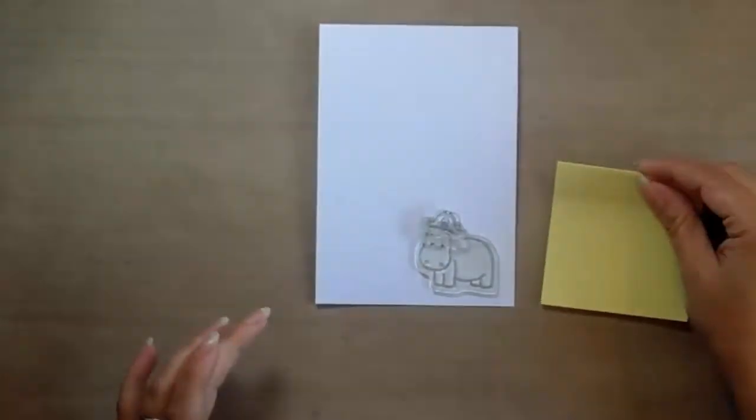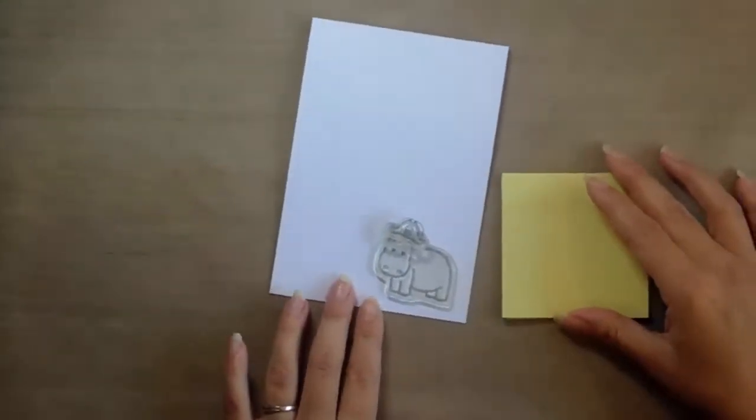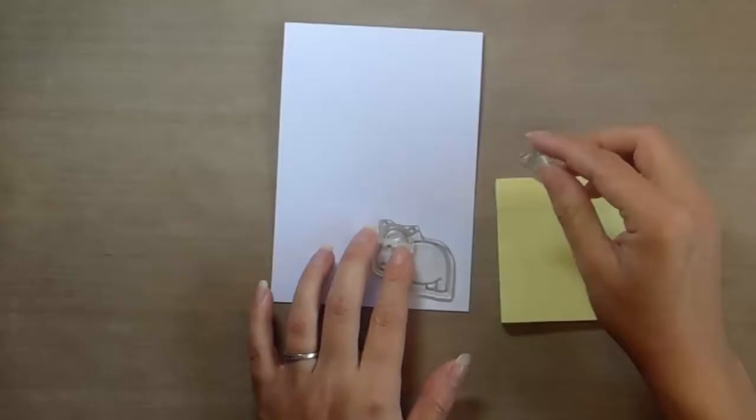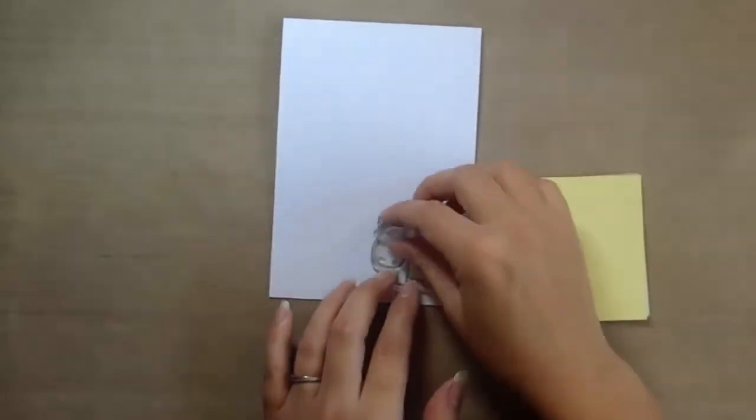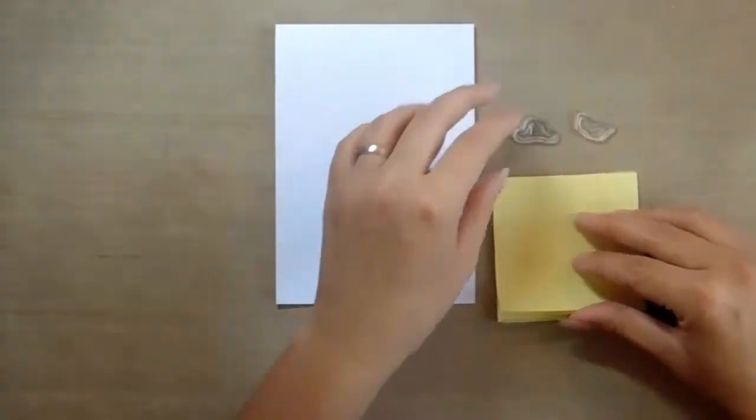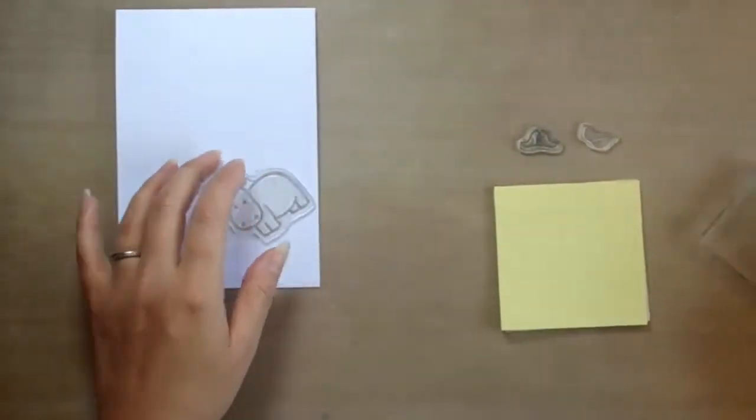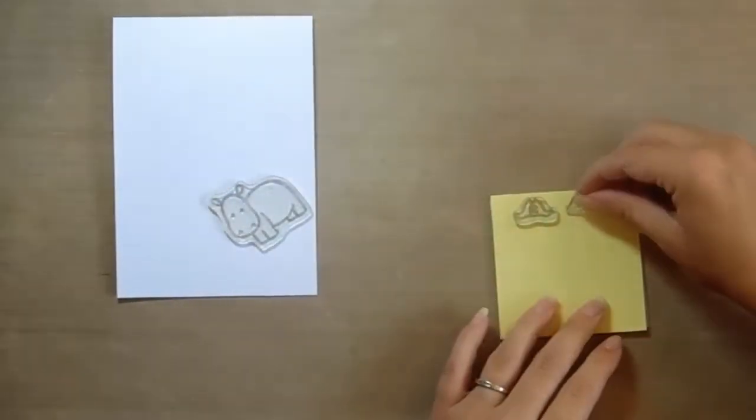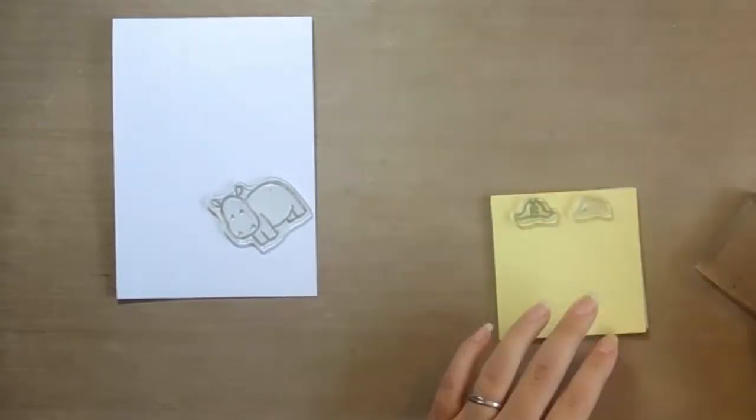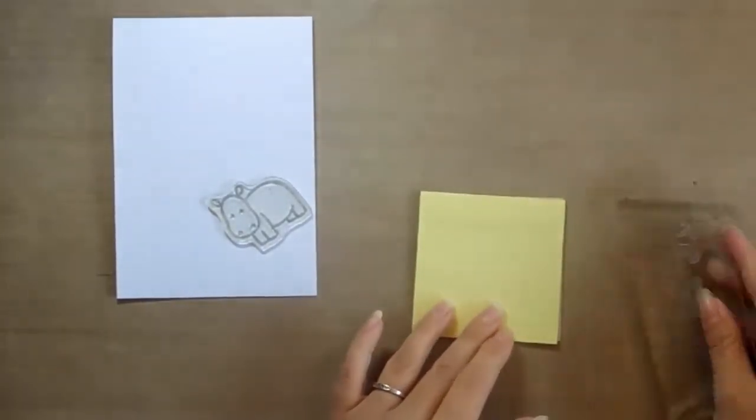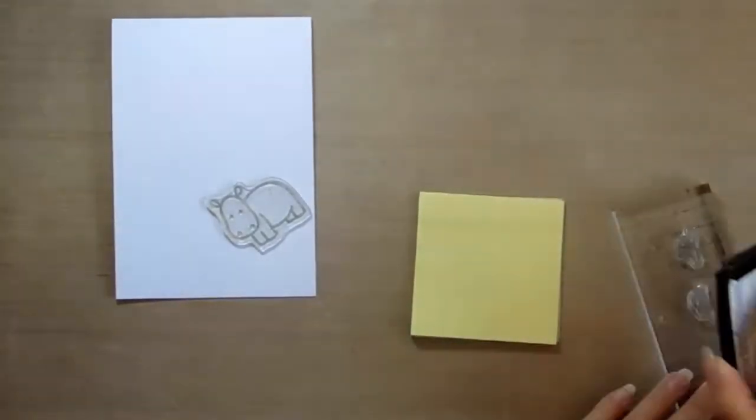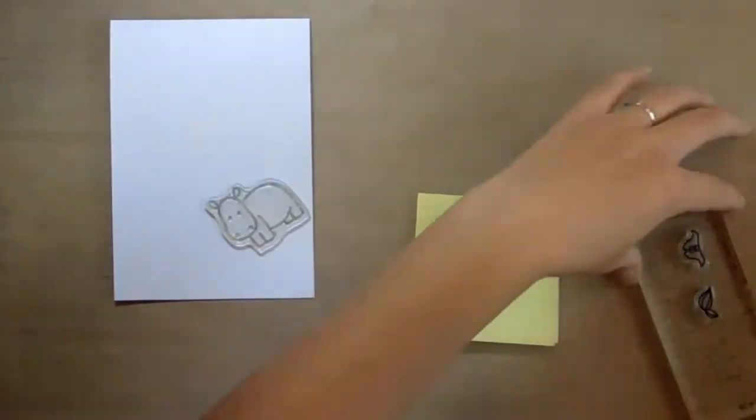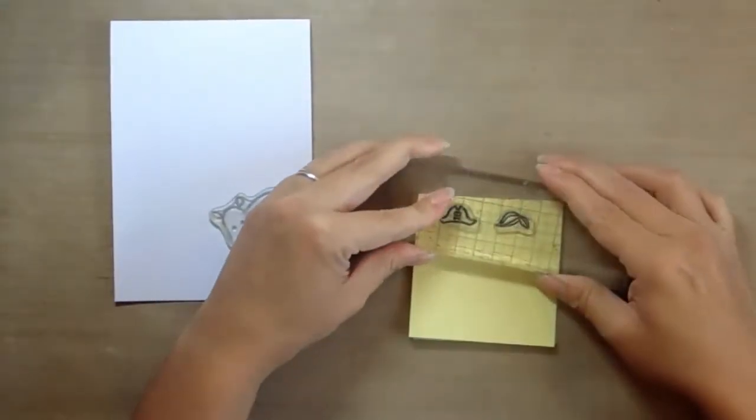You need some sticky notes and we are going to stamp the hat image and also the hair image onto the sticky part of the sticky notes. I'm just going to line up the images along the sticky strip, attach them to my block, ink them up and stamp.